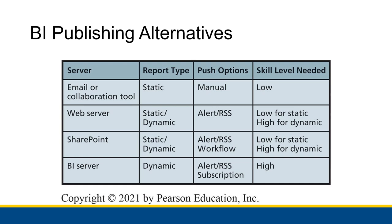For pull publishing across all server types: the user makes a request for the information, that request is authenticated to make sure the information is present and the user is allowed to see it, and then the server — if everything checks out — gives the information back to the user. So that's all the same no matter what. The different server types start with email or collaboration tool.